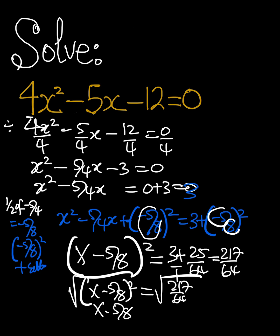When we do that, we're going to have x minus 5 over 8 is equal to plus or minus square root of 217 over square root of 64. And then we're going to have x being equal to square root of 217 over 8 plus 5 over 8 or negative square root of 217 over 8 plus 5 over 8.